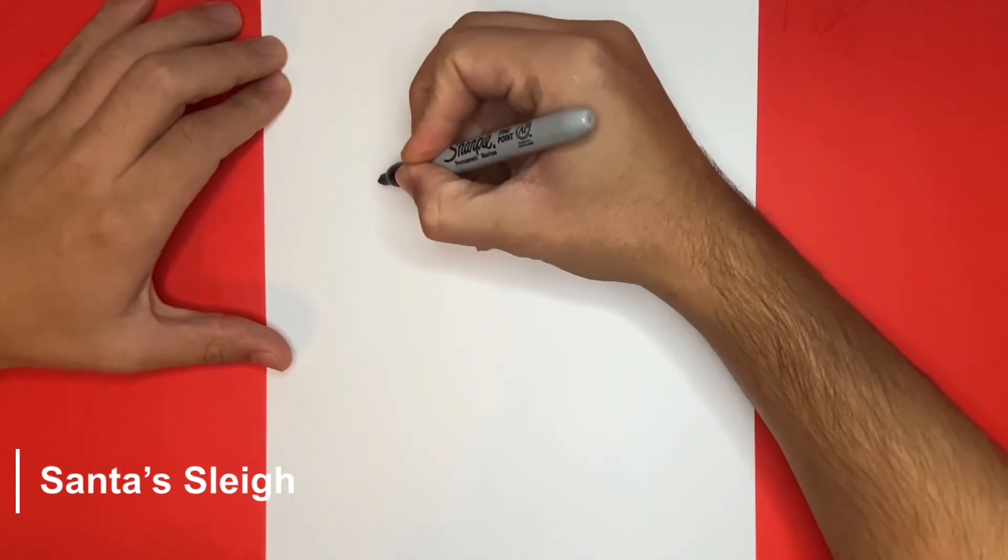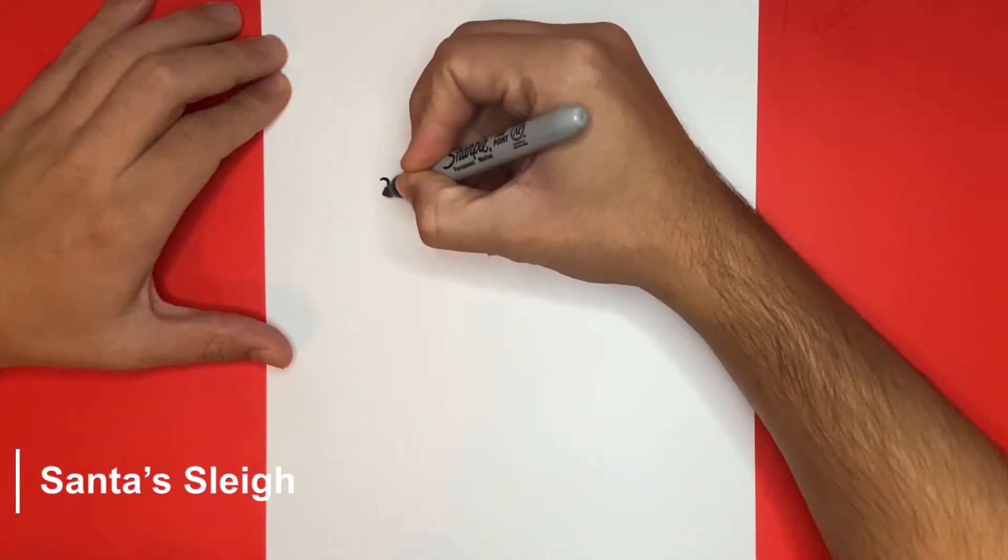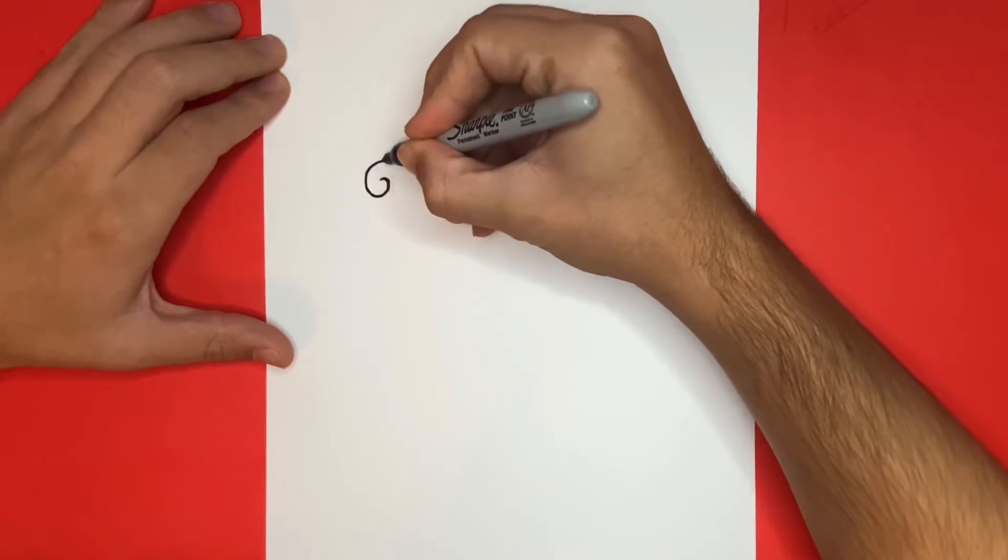For the first step of today's drawing we're going to begin by making a long curvy line with a swirl on each end. This will be the top of the sleigh that we draw today.